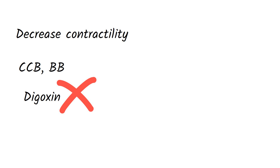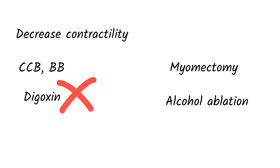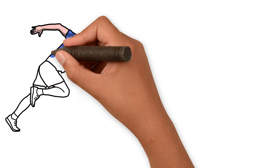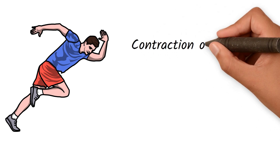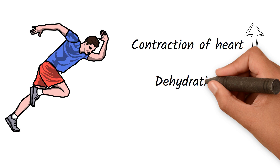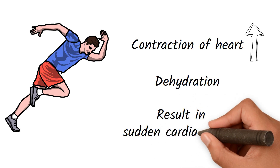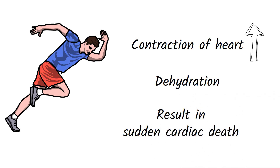If medical treatment doesn't work, myomectomy and alcohol ablation can be performed. An important point is that hypertrophic cardiomyopathy in young athletes can result in sudden cardiac death. Young athletes often practice intensely — increasing cardiac contractility — and may not stay adequately hydrated. This increased contraction and dehydration decreases preload, causing severe narrowing of the ventricles and further obstruction of the left ventricular outflow tract, which can result in sudden cardiac death.